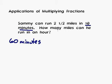10 minutes, 20 minutes, 30 minutes, 40 minutes, 50 minutes, 60 minutes. So he's got to run this 2.5 miles 6 times. We're going to times it by 6. That'll tell us how many miles he can run in an hour or 60 minutes.